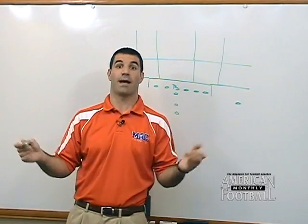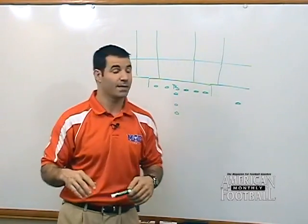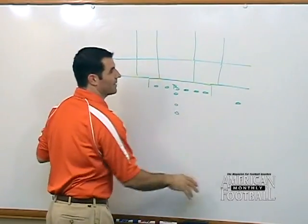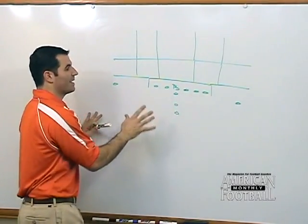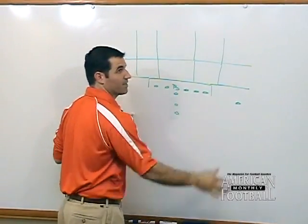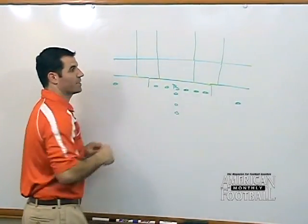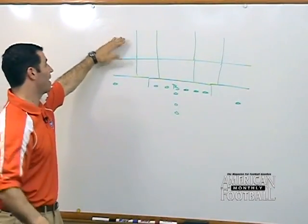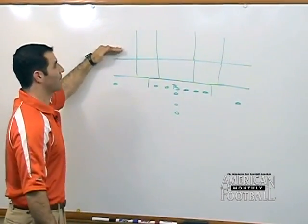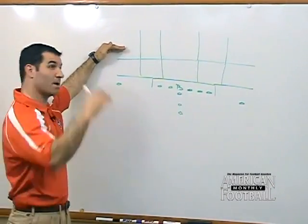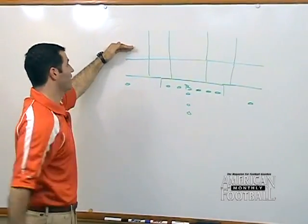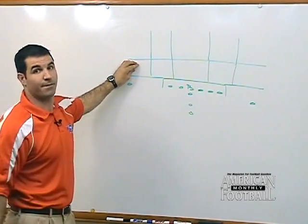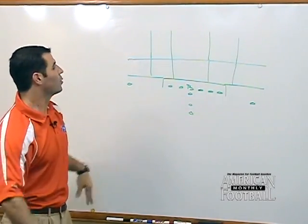In looking at it, we want to separate the field like this. Gaps are created obviously by the offensive linemen, and zones over the top and underneath. We take the zones in those two spots — these are the over-the-top zones, the deep half of the field, the deep portion of the field, and these are the underneath coverage areas of the defense.